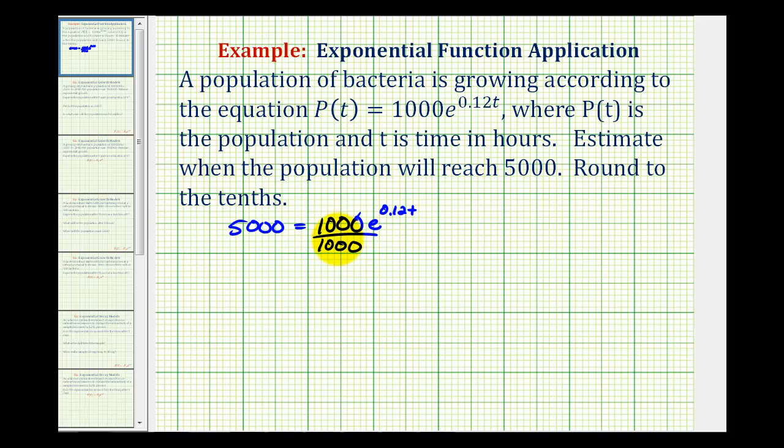This would simplify to 1 on the left side. 5,000 divided by 1,000 is equal to 5, so now we have 5 = e^(0.12t).